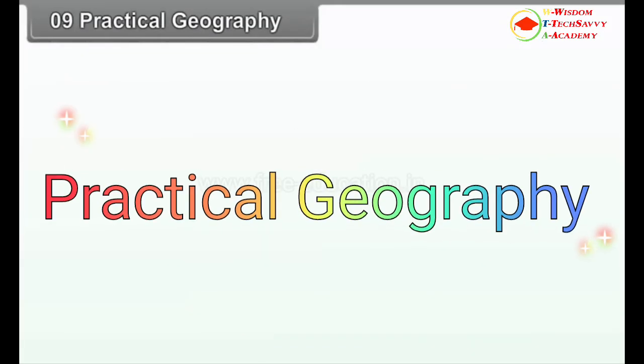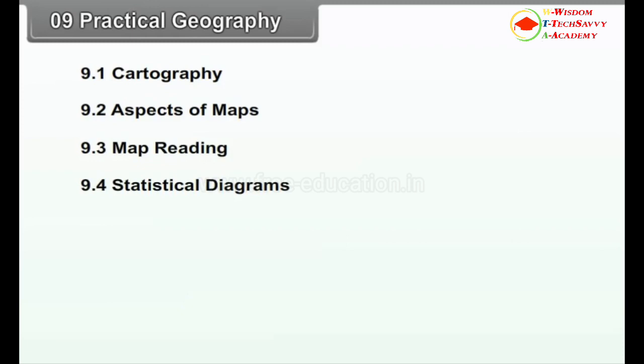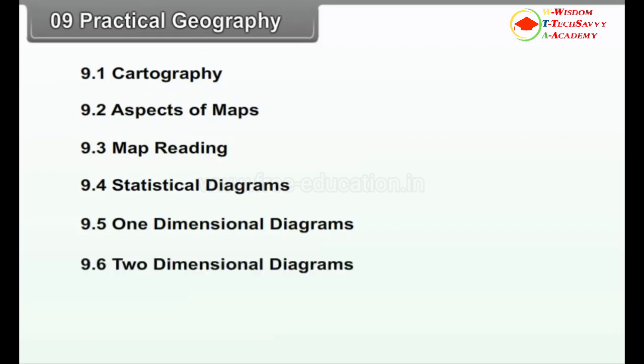Chapter 9: Practical Geography. We will study the following points in this chapter: 9.1 Cartography, 9.2 Aspects of Map, 9.3 Map Reading, 9.4 Statistical Diagrams, 9.5 One-Dimensional Diagrams, and 9.6 Two-Dimensional Diagrams.